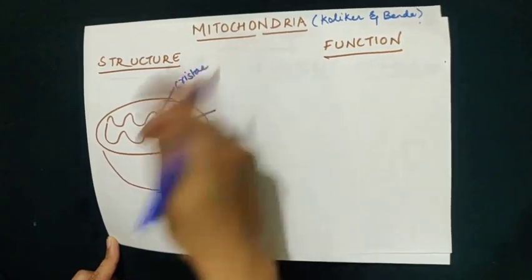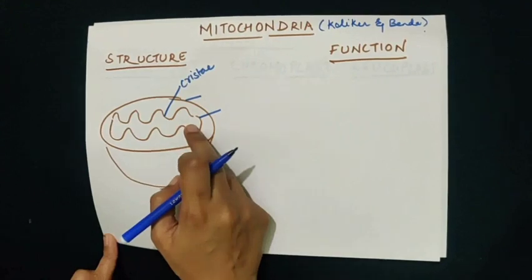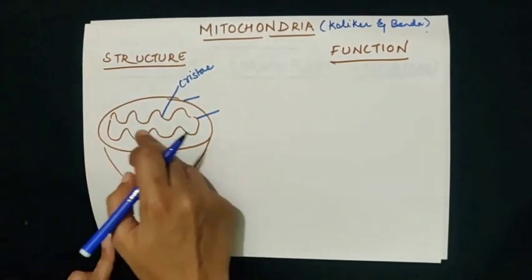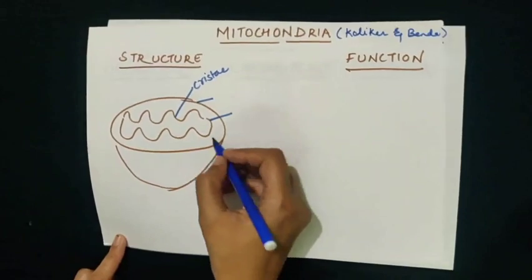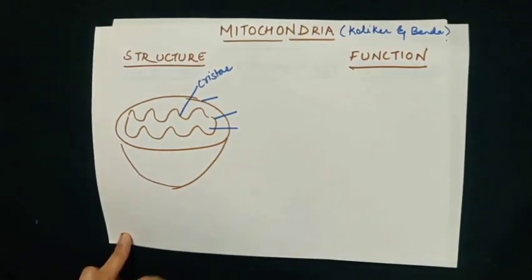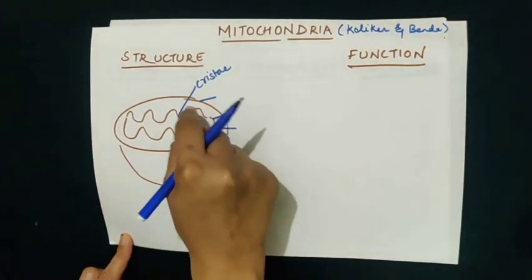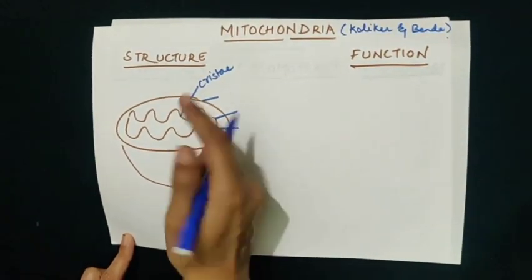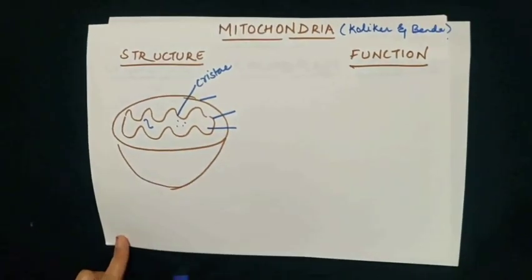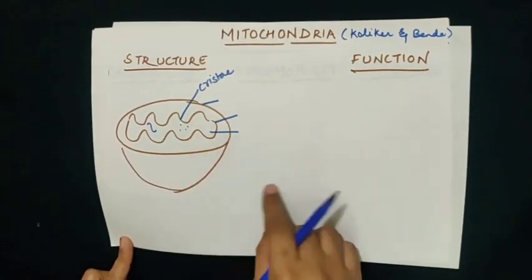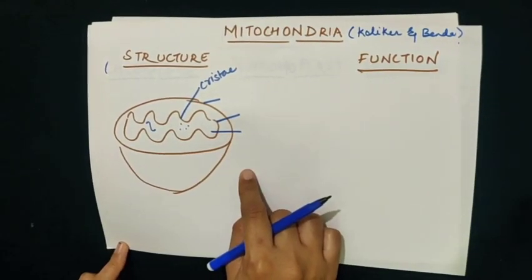Cristae is the plural form. The inner membrane of the mitochondria has got a proteinaceous matrix inside it which is called the mitochondrial matrix. The mitochondrial matrix has also got DNA and ribosomes in it, and these ribosomes help in protein synthesis.